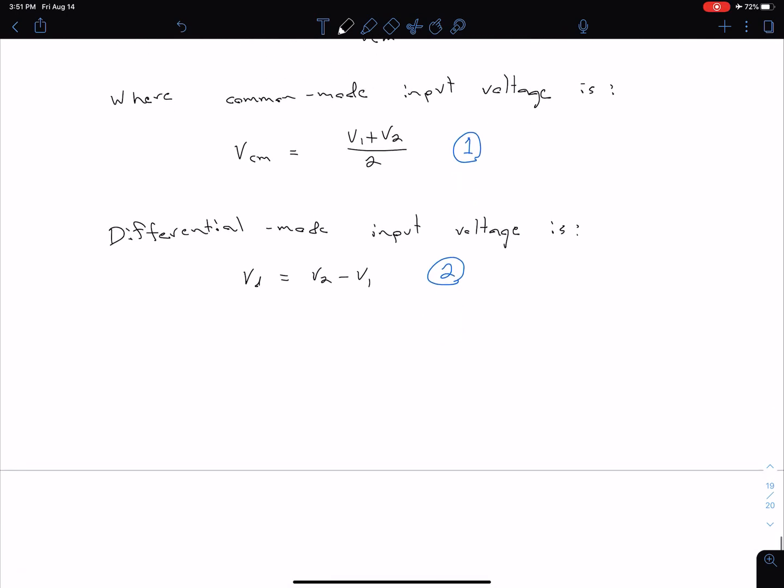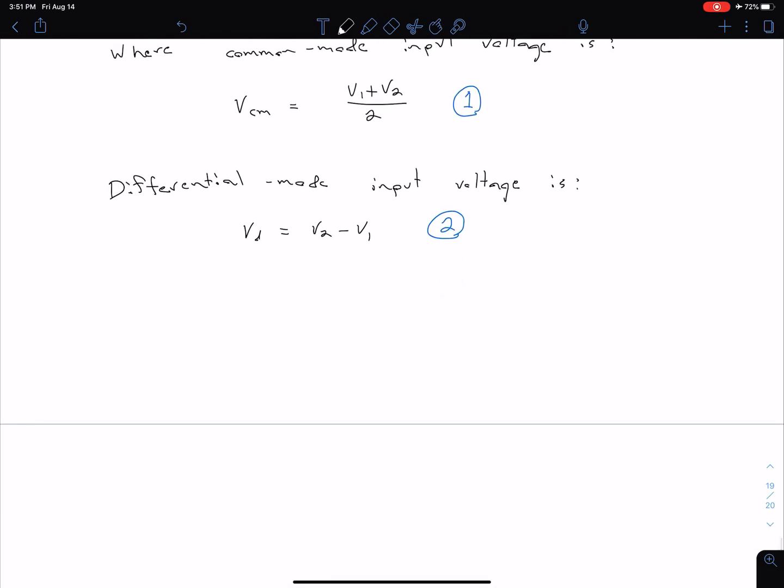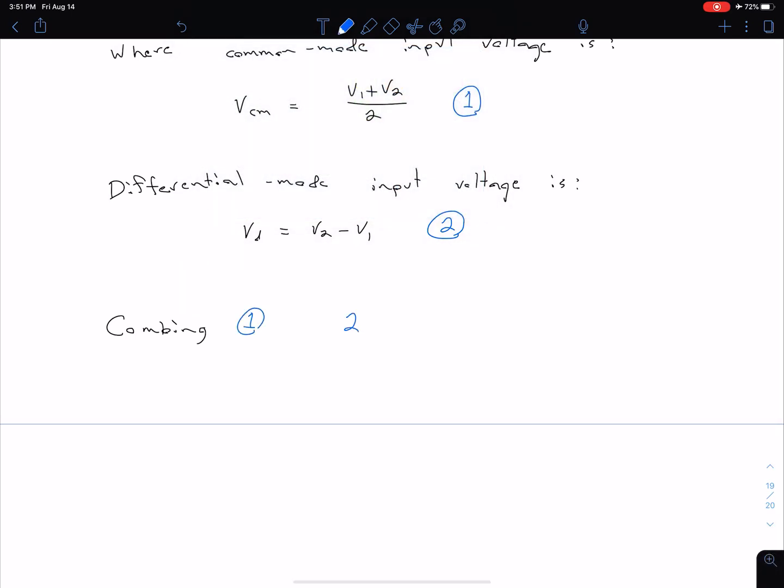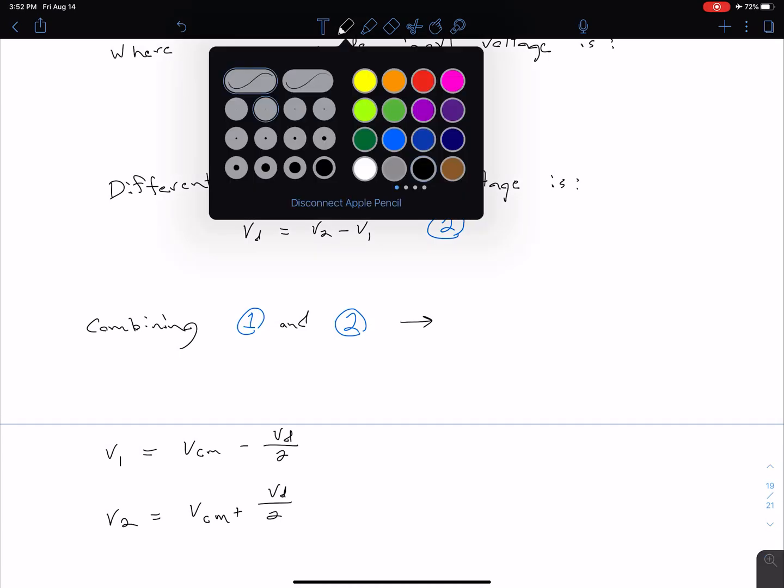If we combine equations 1 and 2, we can get expressions for V1 and V2 in terms of our common mode and differential mode. Combining 1 and 2, what we get is V1 equals V common mode minus Vd over 2, and V2 equals V common mode plus Vd over 2. Let's call these equations 3 and 4 just for reference.